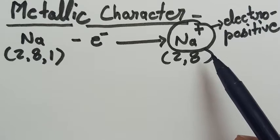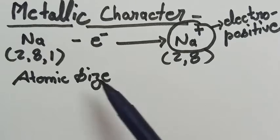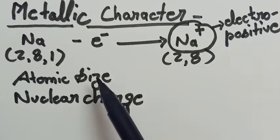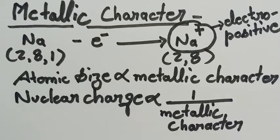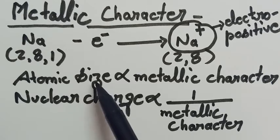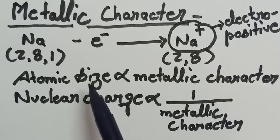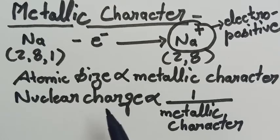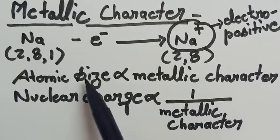There are factors which affect the metallic characteristic. The first one is atomic size and the second one is nuclear charge. Atomic size is directly related with the metallic characteristic — with the increase in atomic size, the metallic characteristic increases, while increasing the nuclear charge, the metallic characteristic decreases.